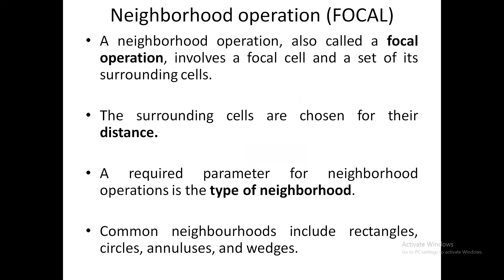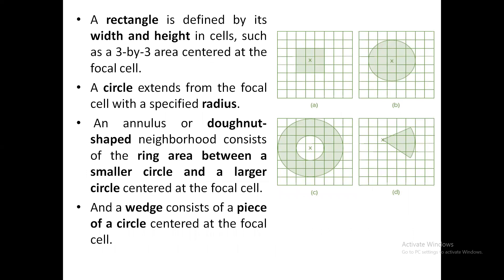The next one is focal operation, also called neighborhood operation. In neighborhood operation, you will be considering the neighborhood cells of the particular cell. In this image, you can see that the grid marked as X is called the focal cell. The focal cell is the particular cell you are going to work on, but you cannot obtain the result by only considering that particular cell — you have to depend on the neighborhood cells also for getting the output. This is the difference between local and focal operation.